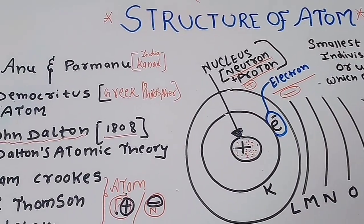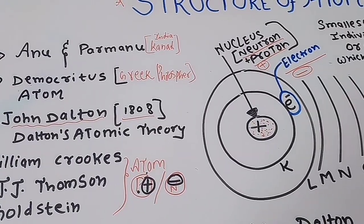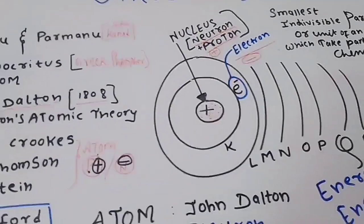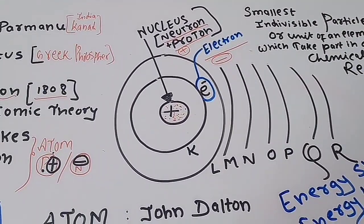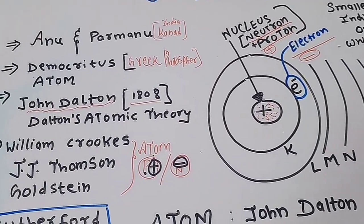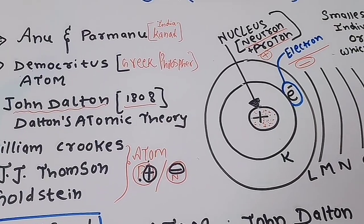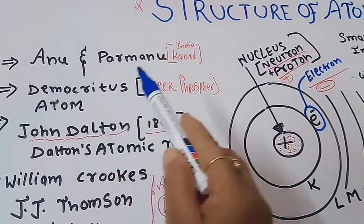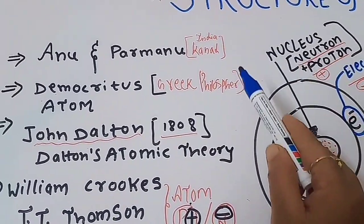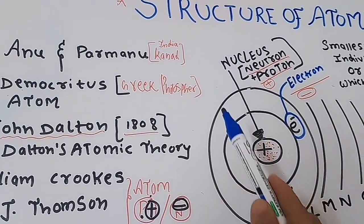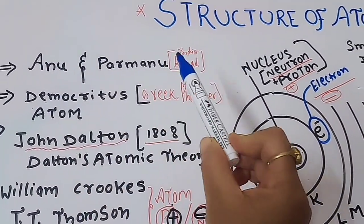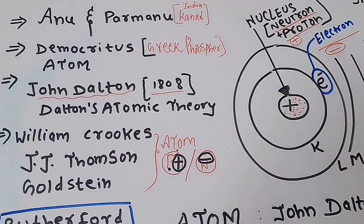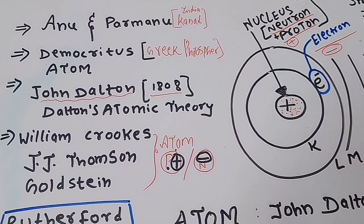In my last video on 'Matter in Our Surroundings,' we saw some basics — that Indian saint Maharishi Kanad discussed that if we keep dividing matter, dividing it further and further, at the very last step what you get is 'parmanu.' This parmanu was termed by Greek philosopher Democritus as 'atom.' So Indian Maharishi Kanad told us about parmanu first, and then Democritus — a Greek philosopher — named it 'atom,' which is a Greek word.